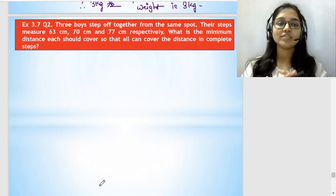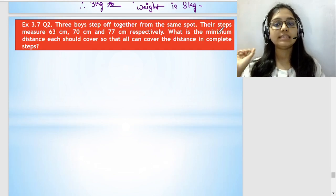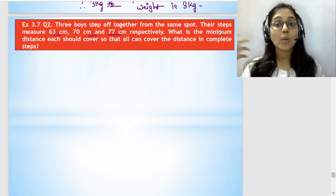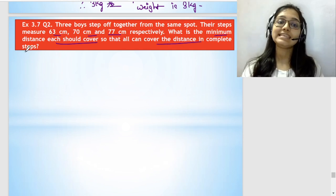Hello everyone, I am Jayashree Mandra and today we will solve question number 2 of exercise 3.7. Three boys step off together from the same spot. Their steps measure 63 cm, 70 cm, 77 cm respectively. What is the minimum distance each should cover so that all can cover the distance in complete steps?